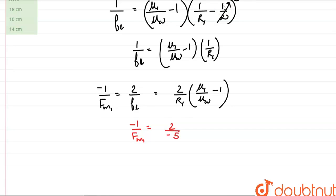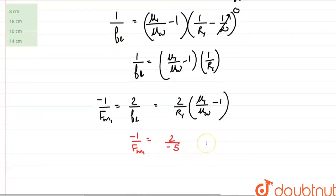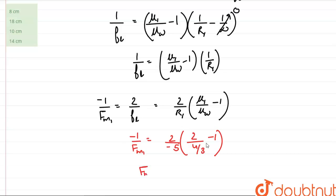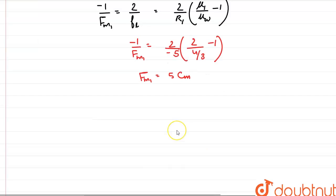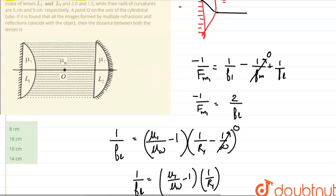Using values: −1/fM1 = 2/(−5) × (2 ÷ (4/3) − 1). The center of curvature lies opposite to the direction of light so we use a minus sign. The refractive index of the lens is 2 and for water it is 4/3. Solving this, we get fM1 = 5 cm. The center of curvature is 2 × 5 = 10 cm. So the object O is 10 cm from the first lens.